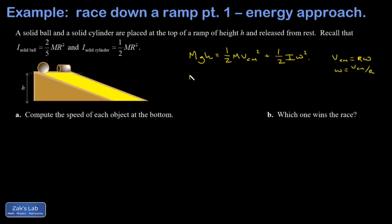Moving on, MGH equals one half MV center of mass squared plus one half I, the moment of inertia about the center of mass for each of these objects, times V center of mass squared, or V center of mass over R all squared.